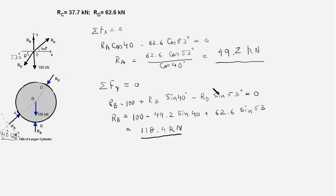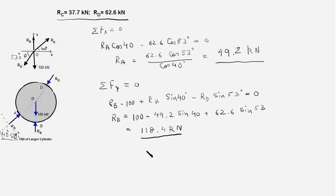So RA = 49.2 kilonewtons, RB = 118.4 kilonewtons, and the values of RD and RC have been found previously. That's the complete answer.